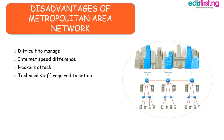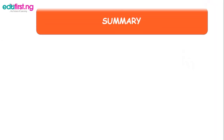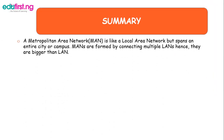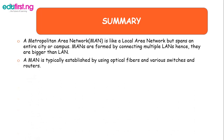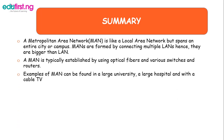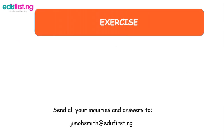In summary, a metropolitan area network is similar to a local area network but spans an entire city or campus. Metropolitan area networks are formed by connecting multiple LANs, hence they are bigger than a LAN. A MAN is typically established by using optical fibers and various switches and routers. Examples of metropolitan area networks can be found in a large university, a large hospital, and with a cable TV network.